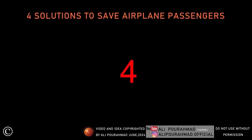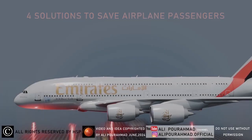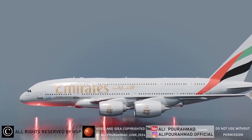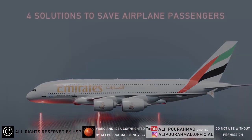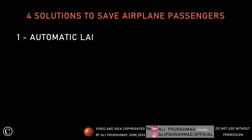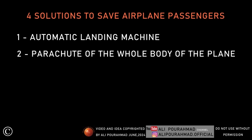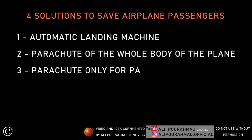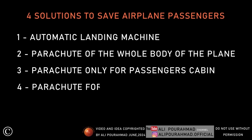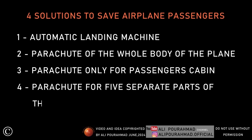4 Solutions to Save Airplane Passengers: 1. Automatic Landing Machine. 2. Parachute of the Whole Body of the Plane. 3. Parachute Only for Passenger Cabin. 4. Parachute for Five Separate Parts of the Passenger Cabin.